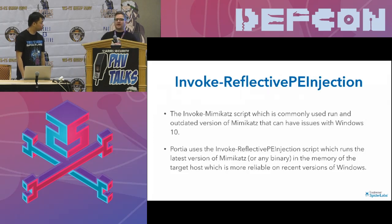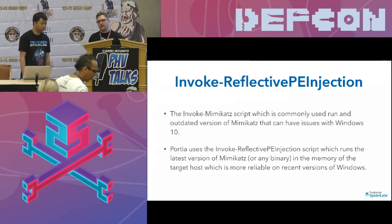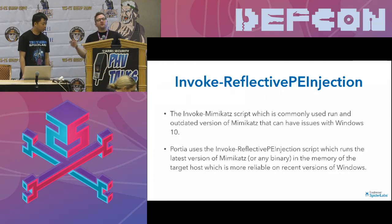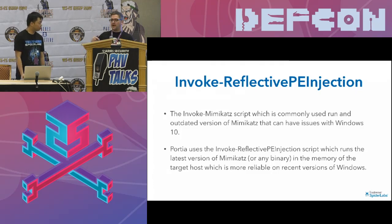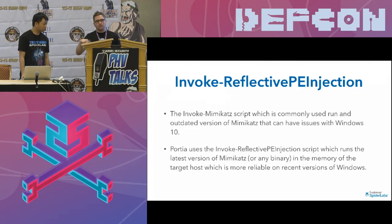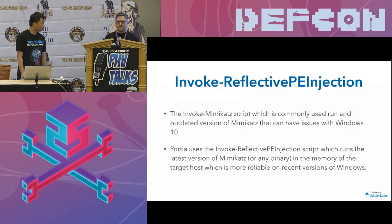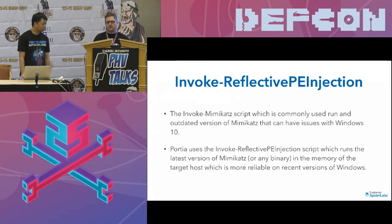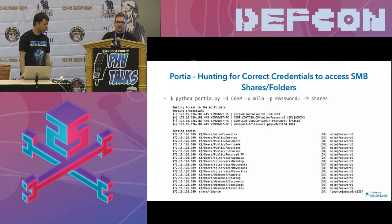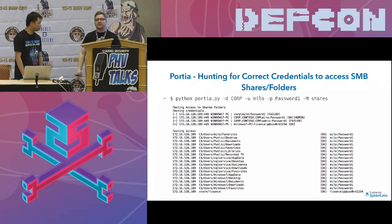Going back to the context where a lot of these scripts and tools aren't well maintained and don't run well against newer versions of Windows — the Invoke-Mimikatz script, which is commonly used to run Mimikatz, is running an outdated version that can have issues with Windows 10. The way Porsche does it, we use the Invoke-ReflectivePEInjection script which runs the latest version of Mimikatz in memory of the target host — a way more reliable approach against recent versions of Windows. Porsche also automatically checks gathered passwords against any available SMB shares to see what can be accessed.